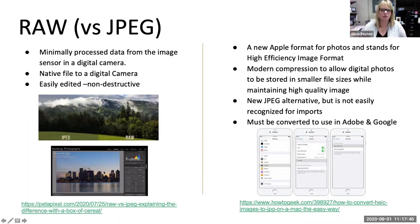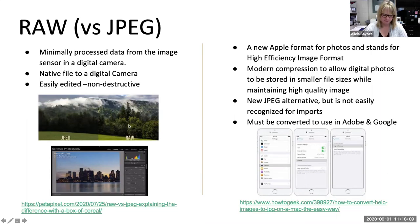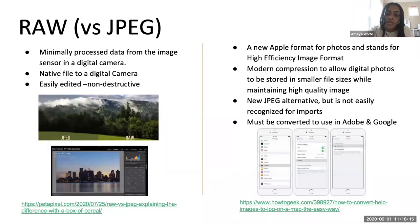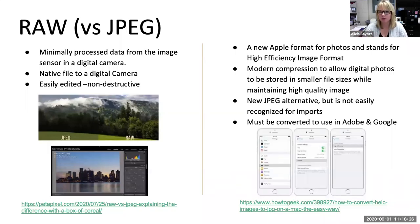What would be the disadvantage to a RAW file? Because of the quality and definition of the image, the file size is very large and not everything can open a RAW file. Everything can pretty much open a JPEG, but you wouldn't be able to process RAW images the same way.